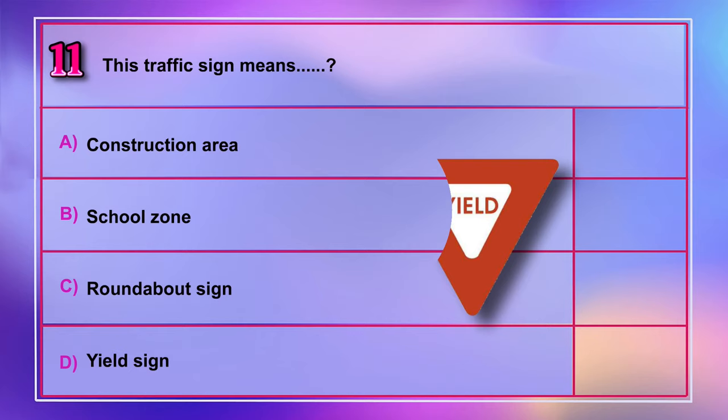Question number 11: This traffic sign means A) construction area, B) school zone, C) roundabout sign, D) yield sign. Correct answer is D: yield sign.